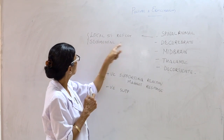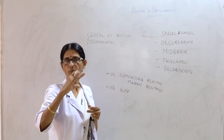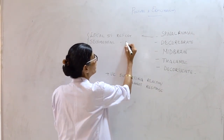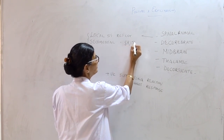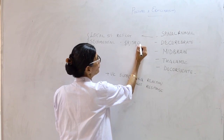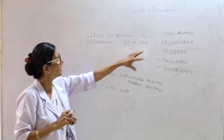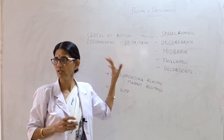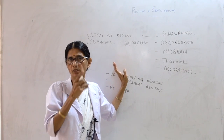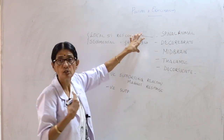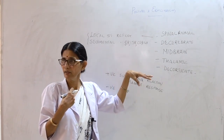The segmental reflexes studied in the spinal animal include all simple spinal-level reflexes: the monosynaptic stretch reflex, the inverse stretch reflex, the crossed extensor reflex, and the withdrawal reflex. The stretch reflex is the basic mechanism by which posture is maintained through muscle contraction due to stretch. The inverse stretch reflex is also a protective phenomenon.